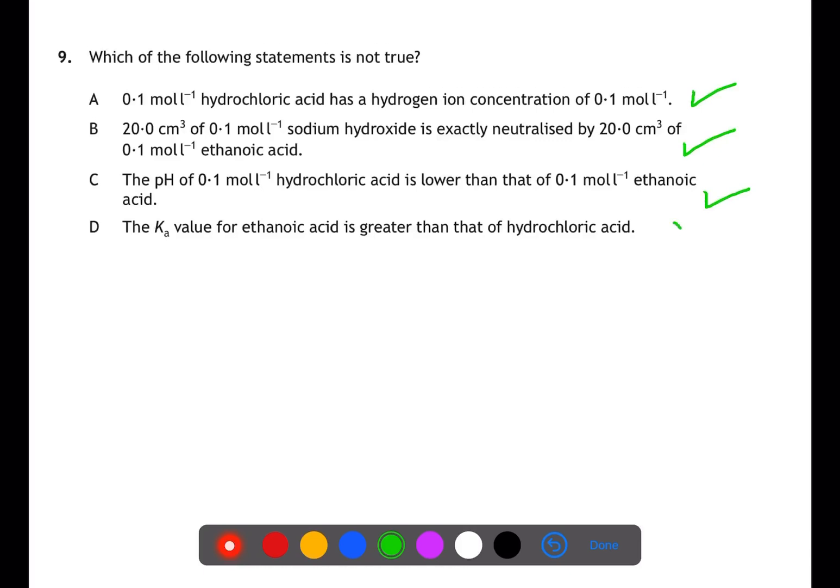D, because ethanoic acid is a weak acid, it will dissociate less than hydrochloric acid. Therefore the Ka value for ethanoic acid will be lower than that of hydrochloric acid, making D our answer.